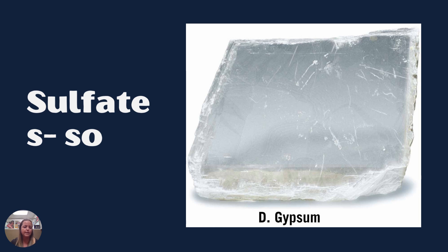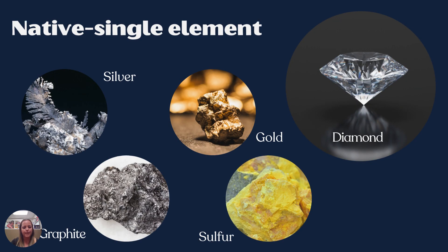Sulfates contain sulfur and oxygen. Gypsum is one of the big sulfates — you can tell it's not super robust because you can see a lot of scratches on it; gypsum is really easy to scratch. Then we have native elements such as silver, gold, graphite, and diamond. These all contain only a single element. We will talk about them quite a bit, but won't necessarily look at many of them in hand specimen — we only have a couple of them in the actual lab.